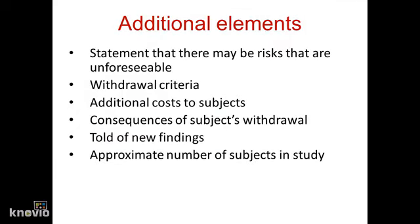Additional elements of informed consent are shown in this slide. There should be a statement that there may be risks that are unforeseeable. Participants need to know the withdrawal criteria, what additional costs might accrue to them, and the consequences if they decide to withdraw. They also need to be told of any new findings discovered in other research that may have implications on their continuing in the study, as well as the approximate number of subjects that will be enrolled.